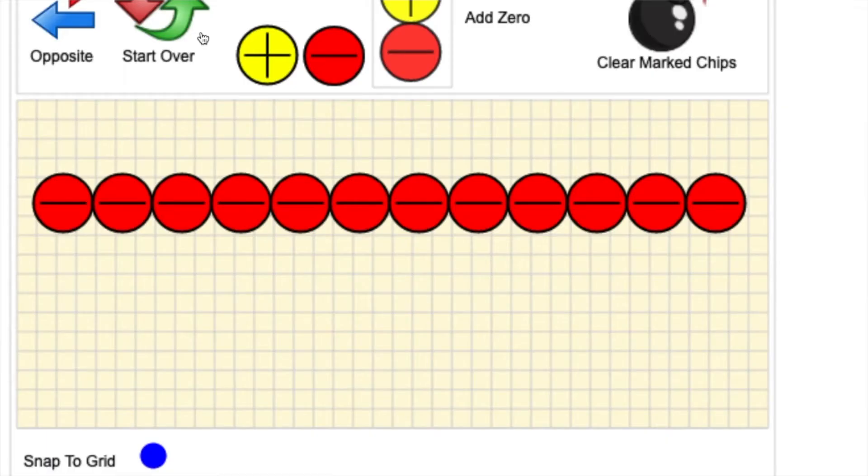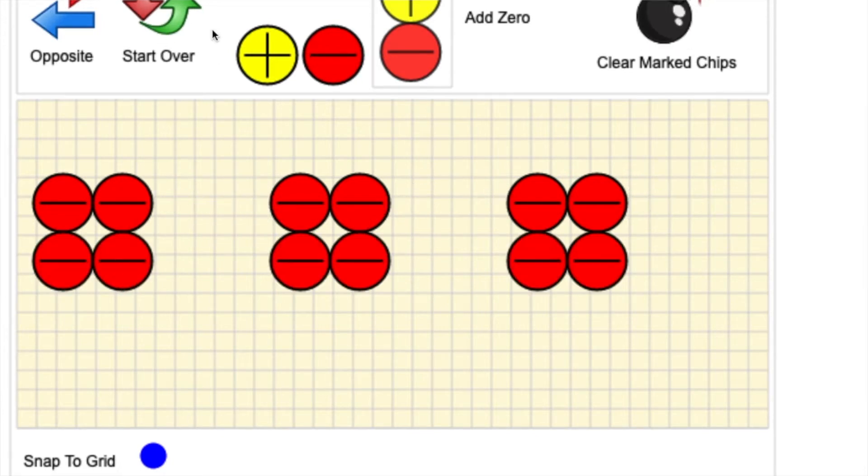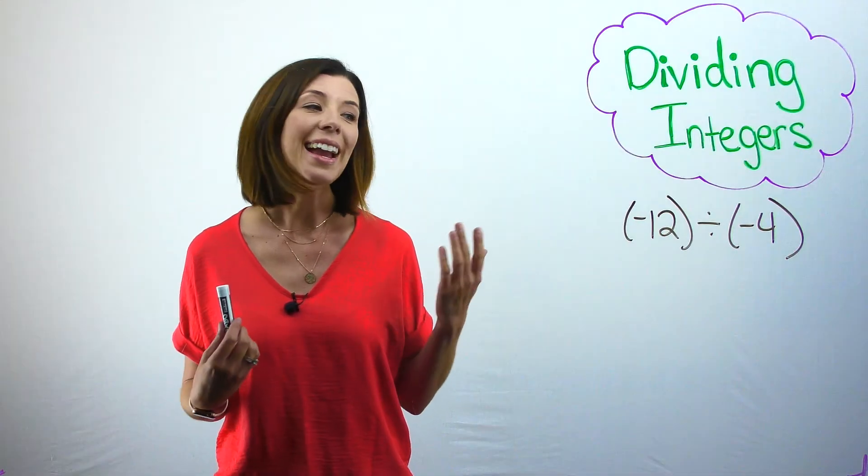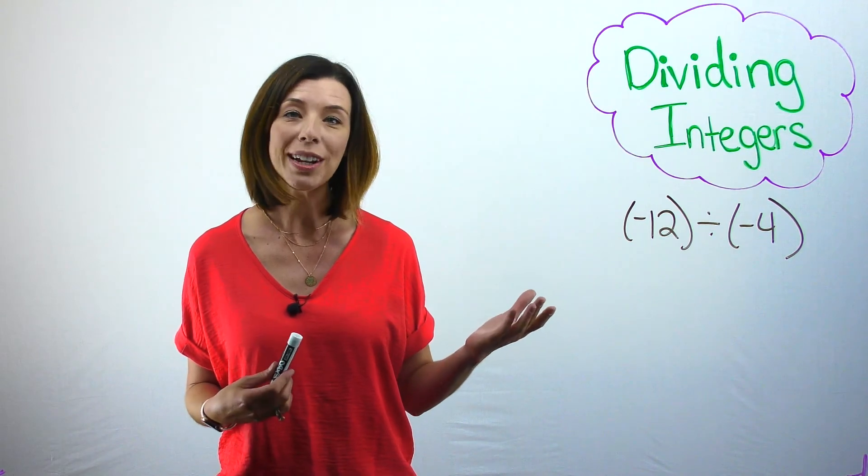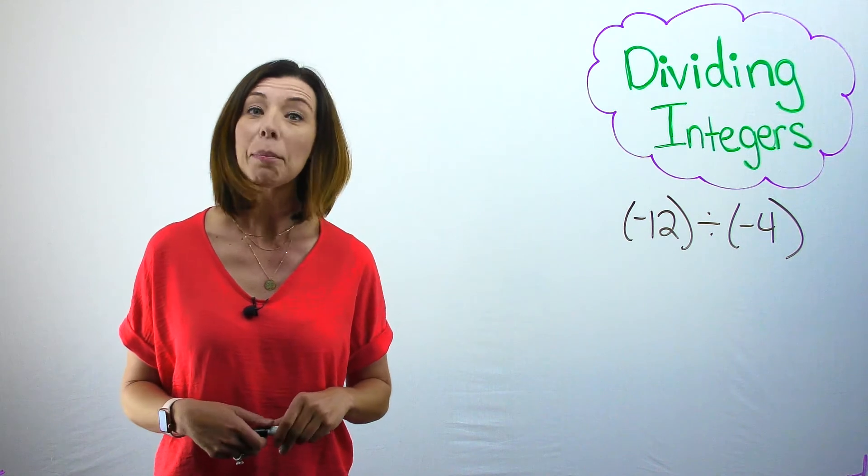So you can see I've got negative 12 on my board. And I'm going to make one group of 4 negatives right here. You can see that I have 3 groups. So my answer or my quotient to negative 12 divided by negative 4 is positive 3.